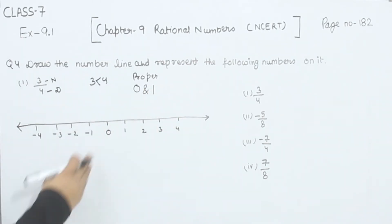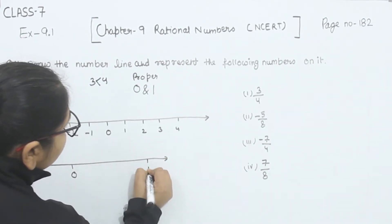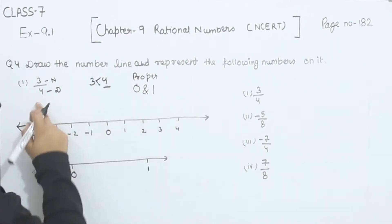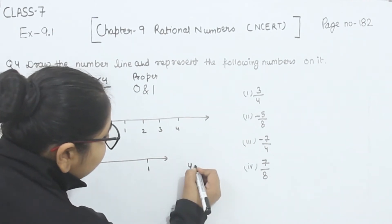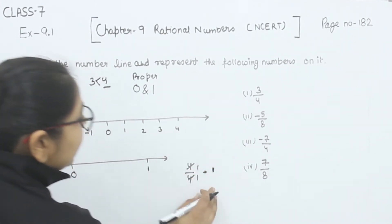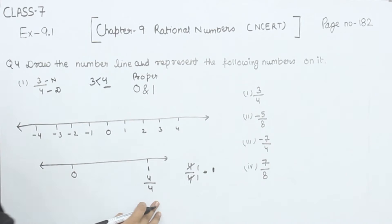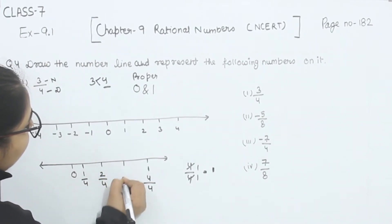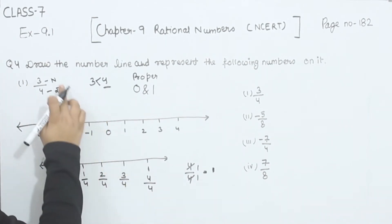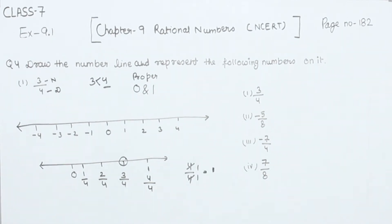Since 3 by 4 lies between 0 and 1, I write 0 and 1 on the number line. For the 1, I have 4 in the denominator, so I can write 1 as 4 by 4. Dividing the interval, I mark 1 by 4, 2 by 4, and 3 by 4. So this is the 3 by 4 on the number line. This is part 1.